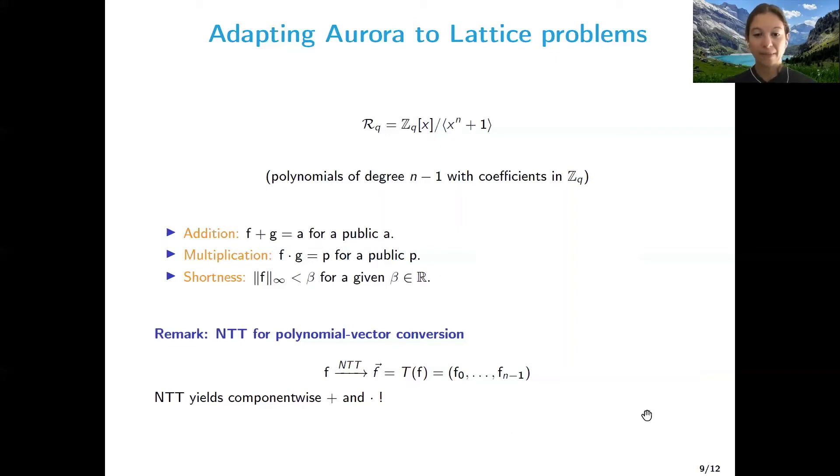Now, why can we use Aurora? Because a listener could actually think, well, we are talking about polynomials now, Aurora is working with elements in ZQ. How can we use Aurora in this case? Well, it's possible to represent polynomials with vectors in many different ways. And in particular, we're going to consider the number theoretic transform, which is particularly useful because it yields component-wise addition and multiplication. So if I have F times G, then the product of F times G can be represented through the number theoretic transform as the component-wise multiplication of the representation of F and G. Which is great, because at this point, we can see why Aurora is actually a very powerful tool in this case.